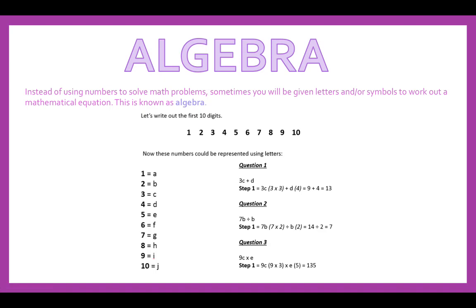Question 3: 9C times E. We've got 9 times C, which is 3, times E, which is 5. So we've got 9 times 3, which is 27, times by the 5, would give you 135. So this is very basic algebra, but you will really need to know this in order to improve your algebra skills.